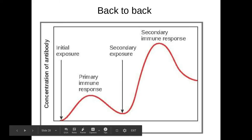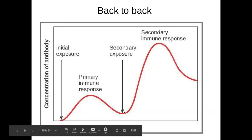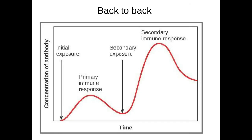So when that antigen re-enters the organism again, it will trigger an immune response. That immune response will happen quicker because clonal selection and clonal expansion will occur a lot more quickly. This will result in a higher concentration or a higher number of plasma cells being made a lot quicker. Because I've got more plasma cells, this means I'm going to get a higher concentration of antibodies, and this is all going to occur a lot more quickly because I've got that immunological memory from my memory cells.